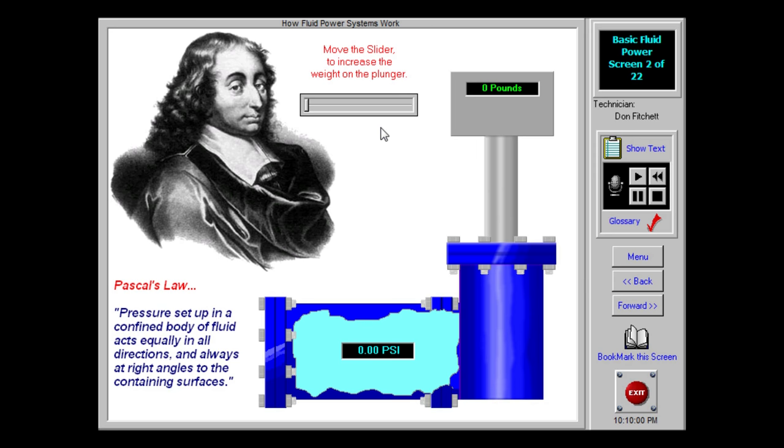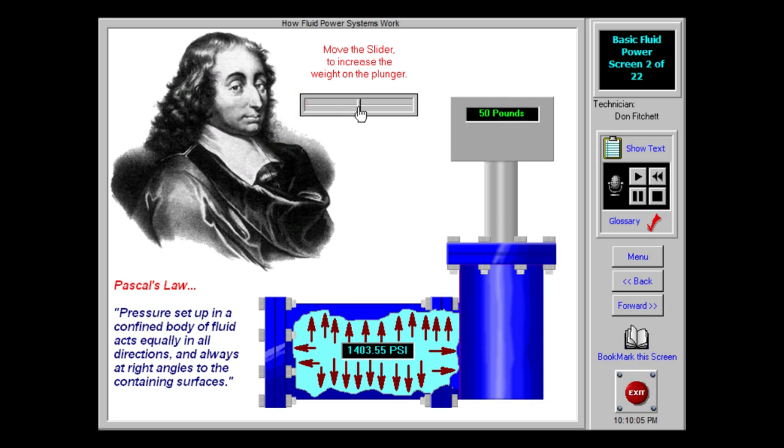Approximately three centuries ago, the great French scientist Blaise Pascal demonstrated that pressure exerted anywhere on a confined fluid, either gas or liquid, is transmitted undiminished in all directions, with equal force exerted on all equal areas.